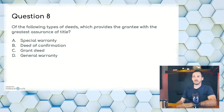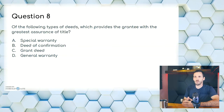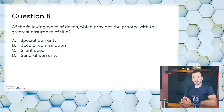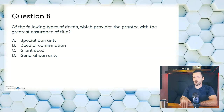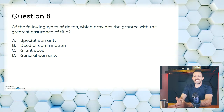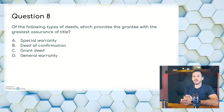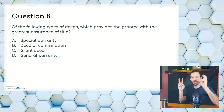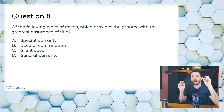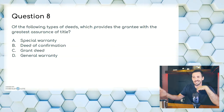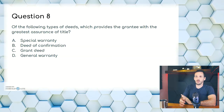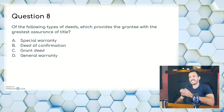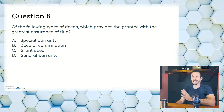Question eight: of the following types of deeds, which provides the grantee with the greatest assurance of title? A, special warranty; B, deed of confirmation; C, grant deed; or D, general warranty. Special warranty is limited in scope — it does not provide a warranty for past owners. General warranty deed covers all of it. The answer here is D.